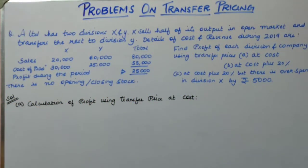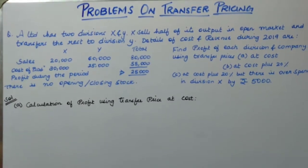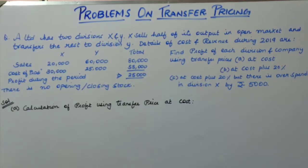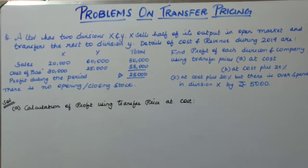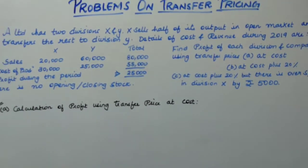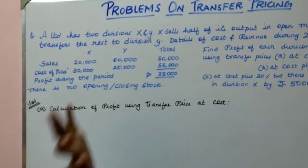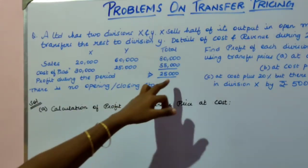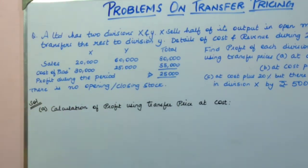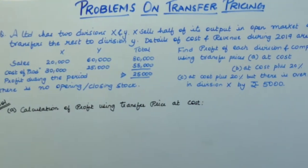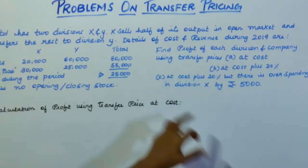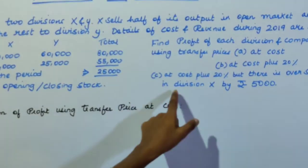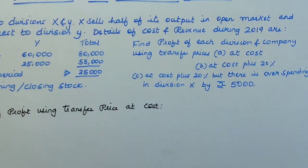Welcome back students. We are going to start with another set of problems on transfer pricing. A Limited has two divisions, X and Y. X is selling half of its output to Y and half in the open market. X's sales is 20,000, Y is 60,000, and the total cost of production for X is 30,000 and Y is 35,000, with a company profit of 25,000. We need to find profit under three conditions: transfer price at cost, at cost plus 20%, and at cost plus 20% but with overspending in division X by 5,000.